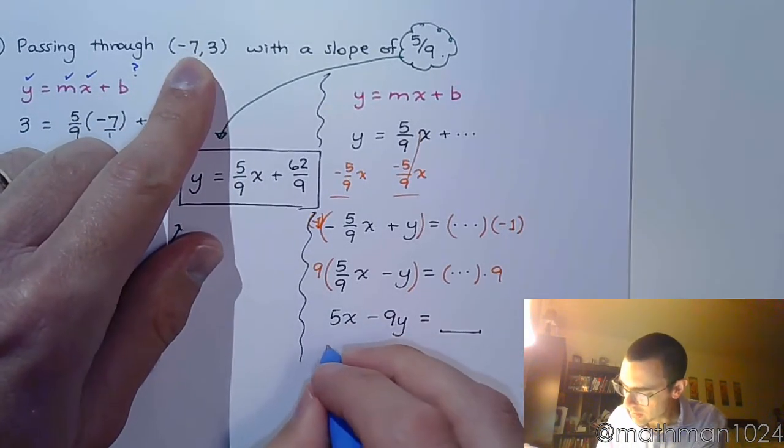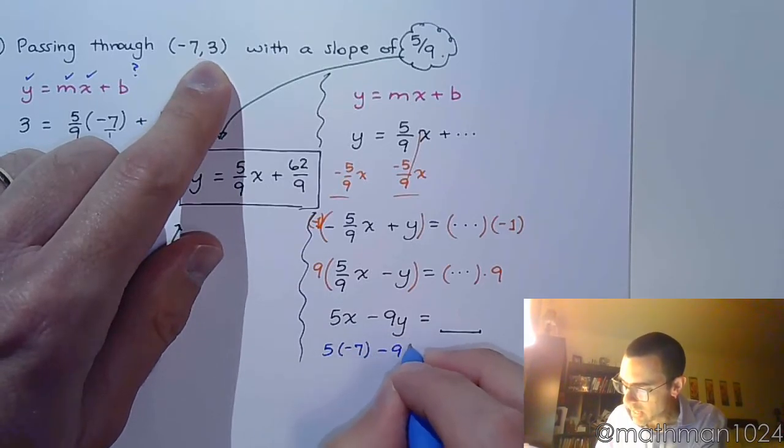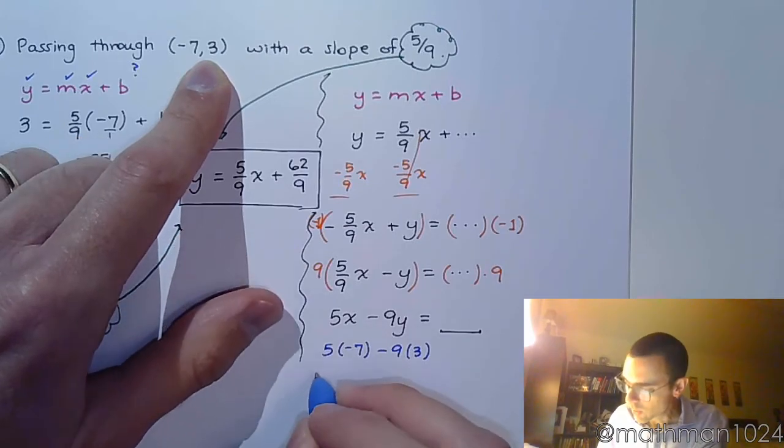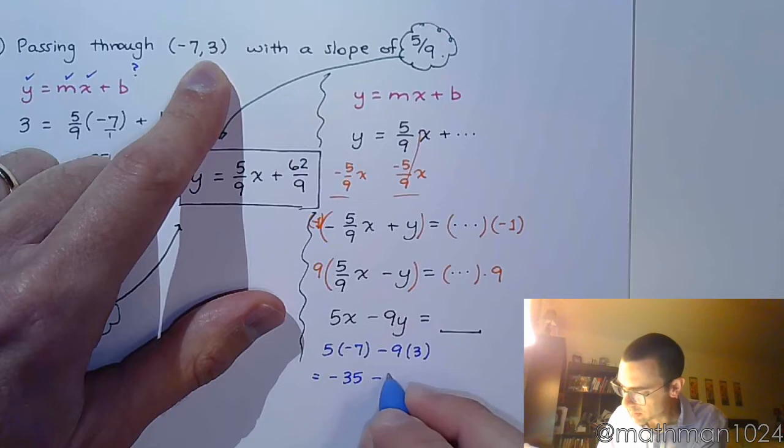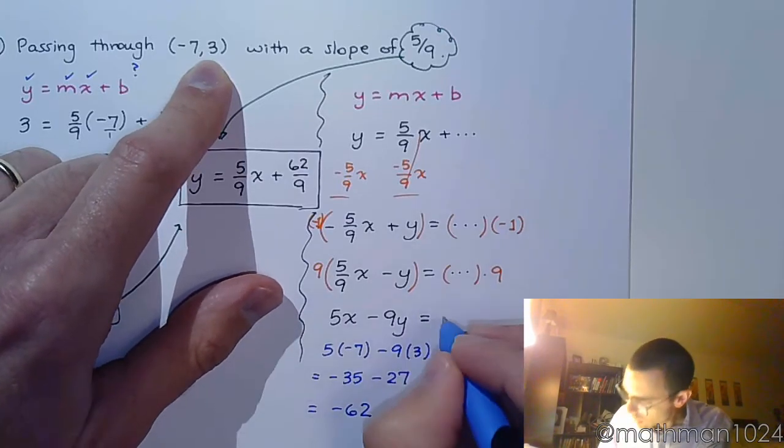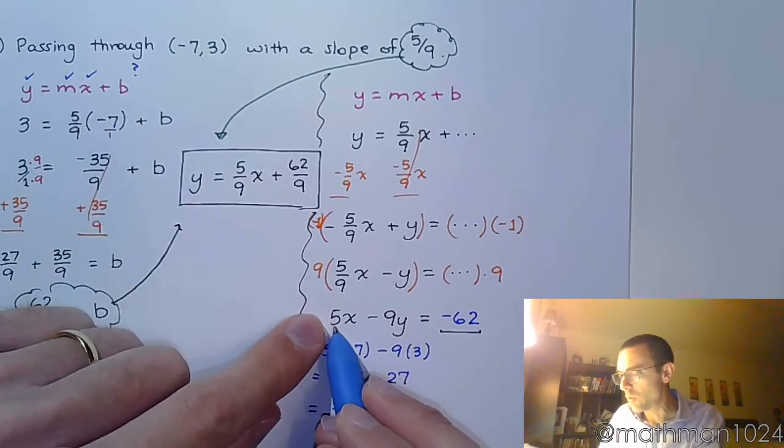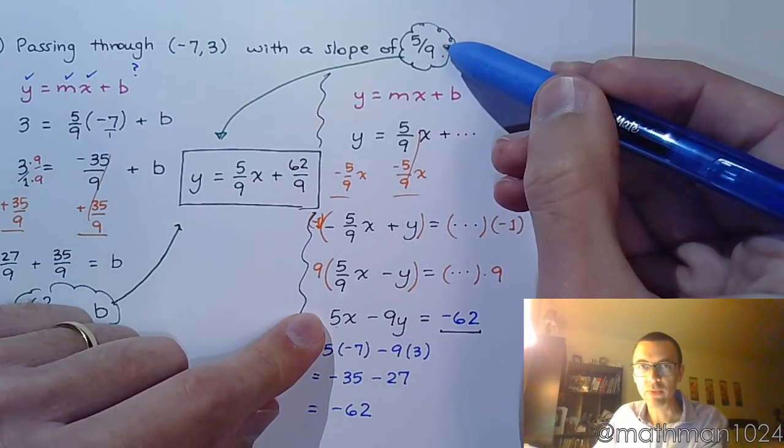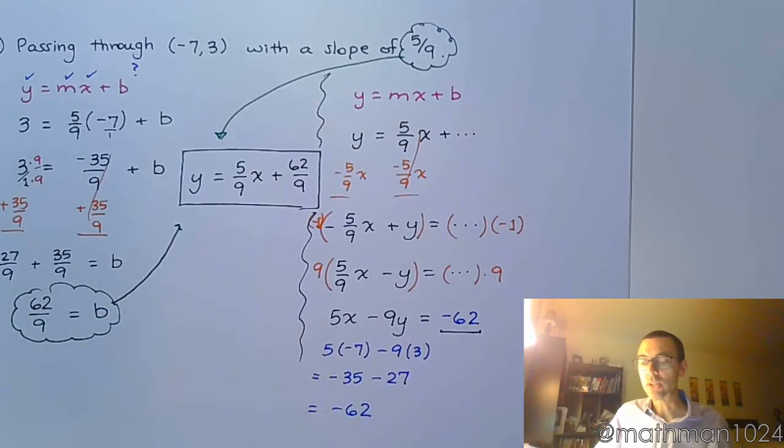And we don't have to guess at what it is. We can take these guys right here and plug them in. So let's plug in negative 7, and let's plug in 3. So when I work this out, we get negative 35 minus 27, and we get negative 62. So, that's the value that goes over here. So, this equation is going to have a slope of 5 over 9, and negative 7, 3, you can plug them in here, and it's going to give you negative 62, which makes that a solution to this equation.